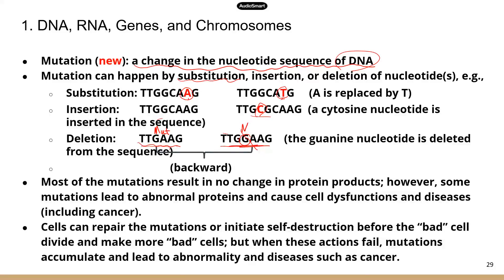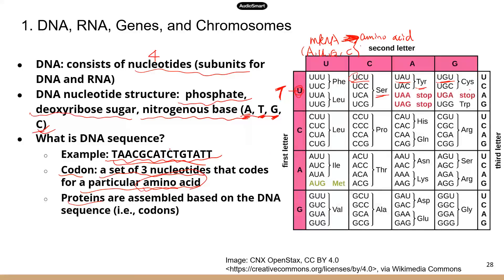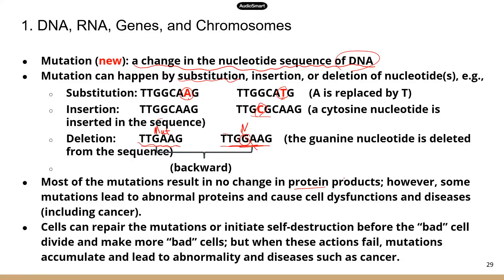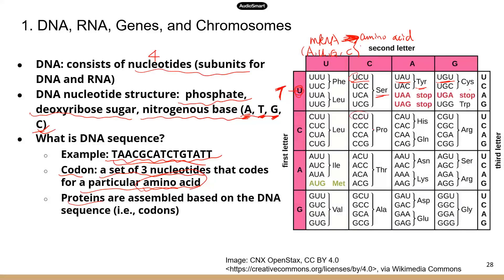Most mutations, believe it or not, result in no change in protein products because of two main reasons. First, if you look at the codon table, each amino acid is often coded by multiple codons. For example, proline has four different codons that all code for it. So if a mutation happens to the last nucleotide of that codon, it doesn't matter what you change — you will still get proline. So even with a mutation, the protein remains the same.